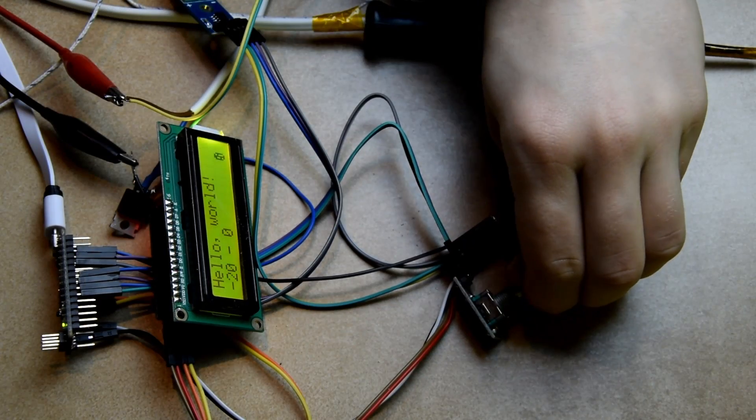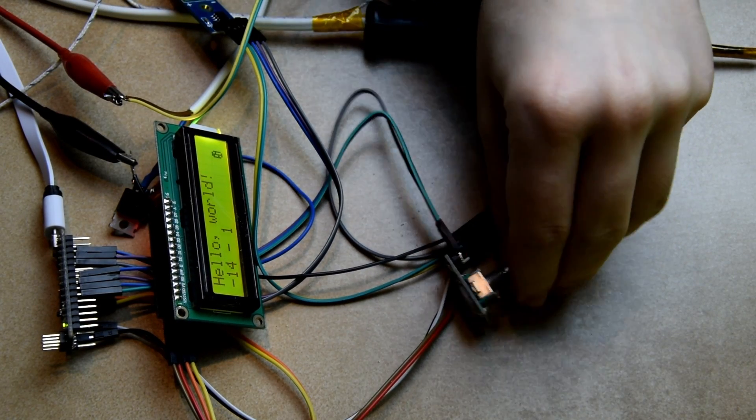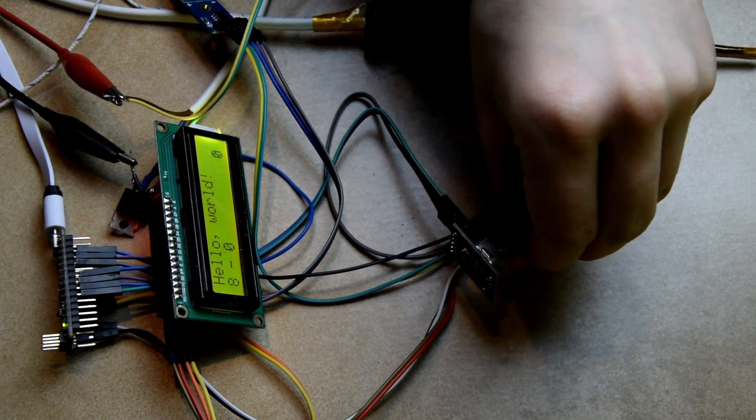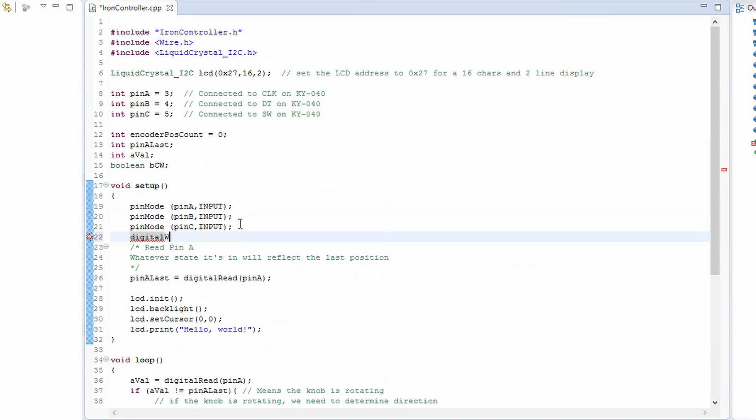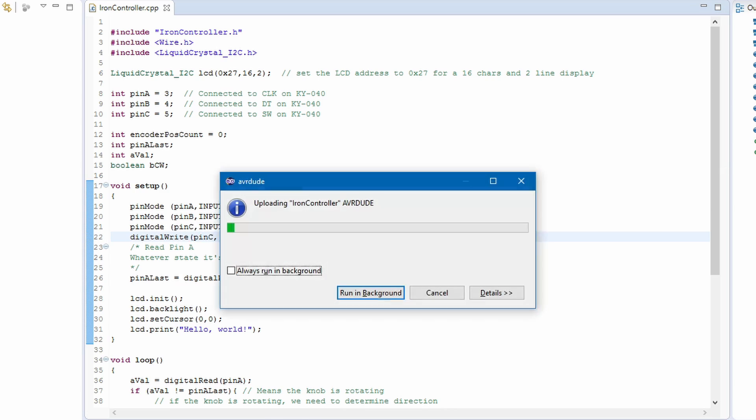After copying the code, we can see that the encoder mostly works, although not reliably, as the delay caused by updating the screen causes steps to be lost. It also turns out there is no pull-up for the button by default. To fix it, we'll turn on the internal resistor in the Arduino.